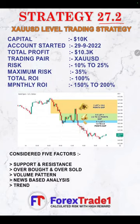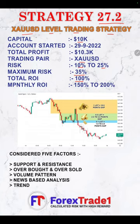Strategy number 27.2 is the XAUUSD gold level trading strategy. The initiated capital is a ten thousand dollar account, started on the twenty-ninth of September, and the total profit so far is ten thousand three hundred dollars. The trading pair is XAUUSD. The risk we are taking is ten to twenty-five percent on the equity, and during maximum risk — as XAUUSD is highly volatile — it can go up to thirty-five percent. The total ROI till now is 100 percent on this account, and the monthly ROI we can expect is around 150 to 200 percent.